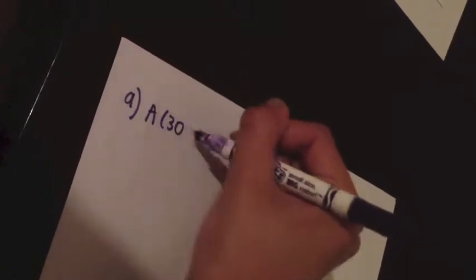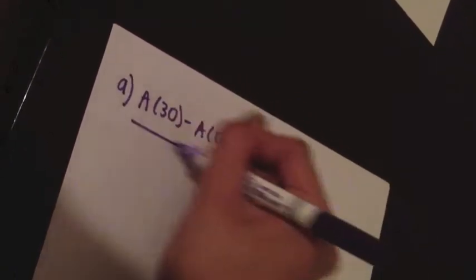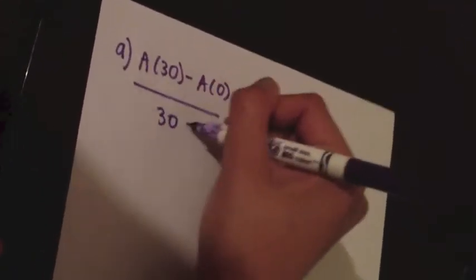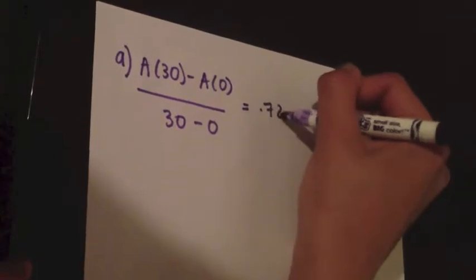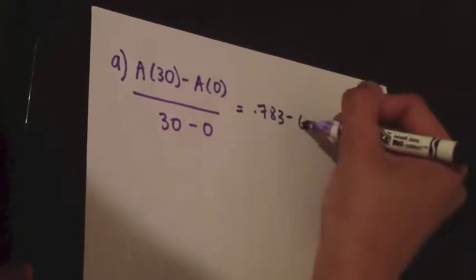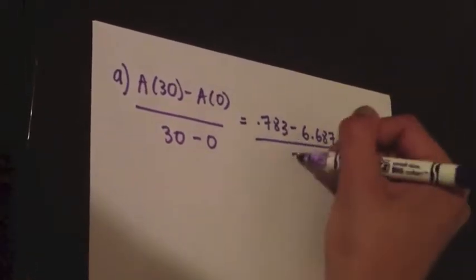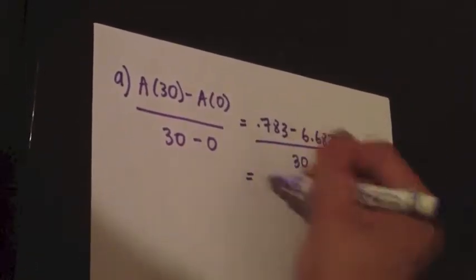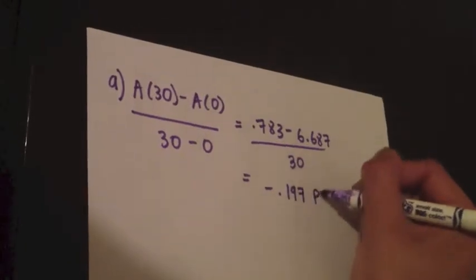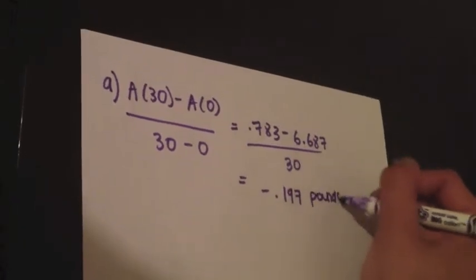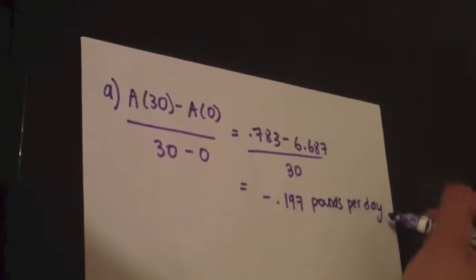To find the average rate of change of a of t over the interval 0 to 30 days, we subtract the value of a of 0 from the value of a of 30 and divide it by 30. That gives us an answer of negative 0.197 pounds per day.